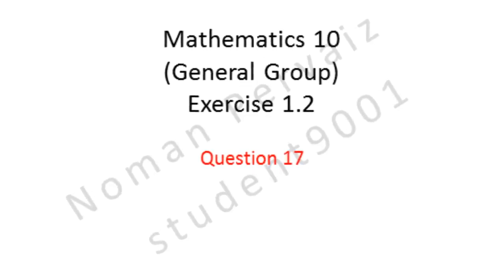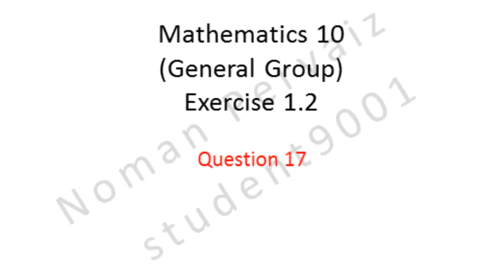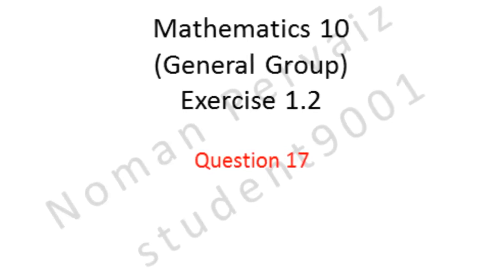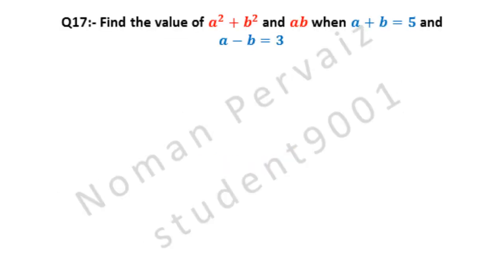Next we are going to solve question number 17 of 10th class math general group exercise 1.2. Question 17 is: find the value of a² + b² and ab, when a + b = 5 and a − b = 3. We have to find two values: first is a² + b², and second is the value of ab.